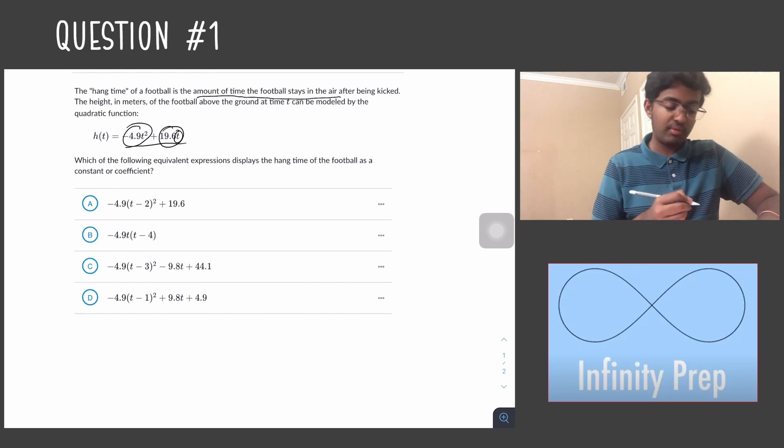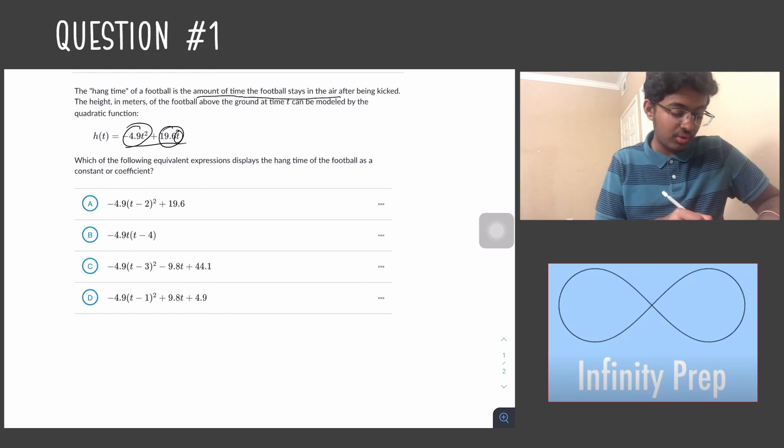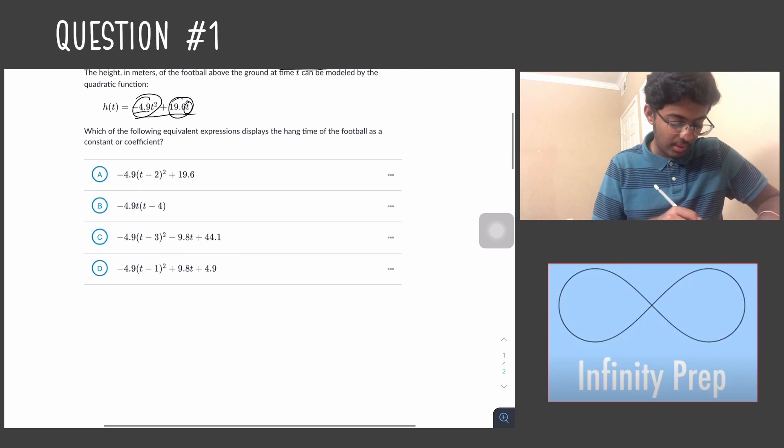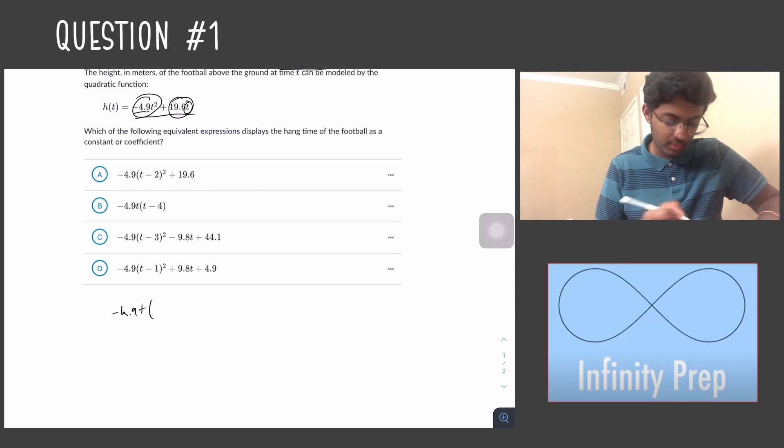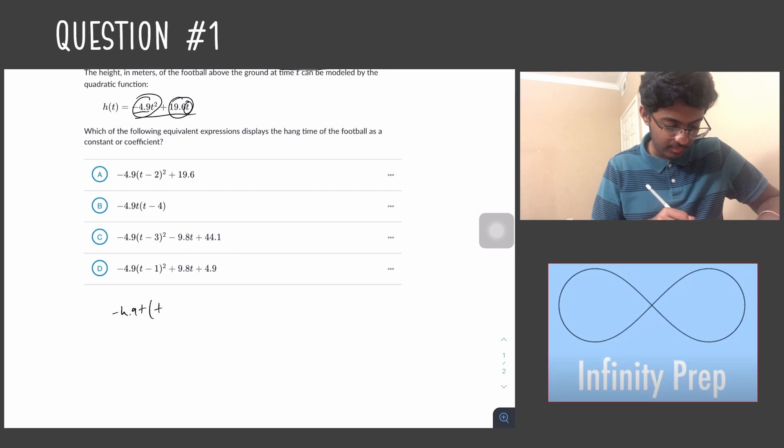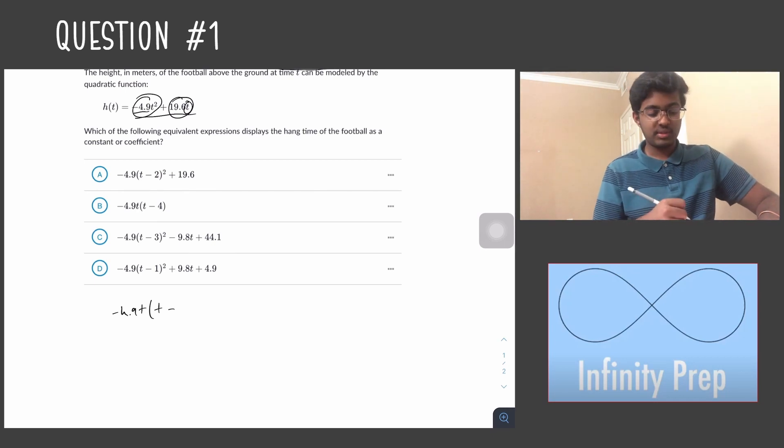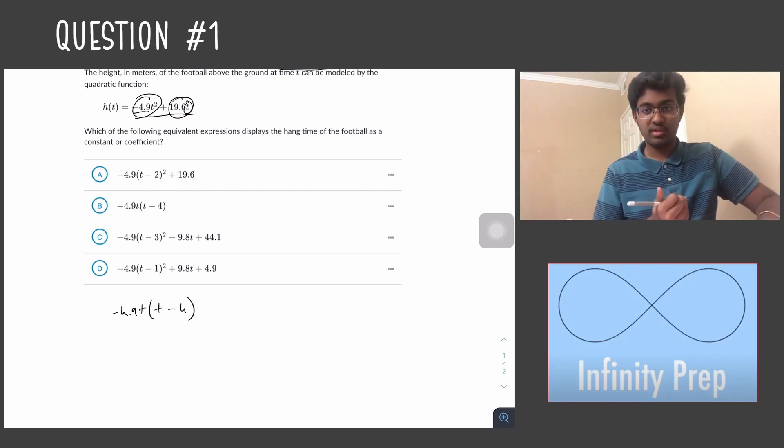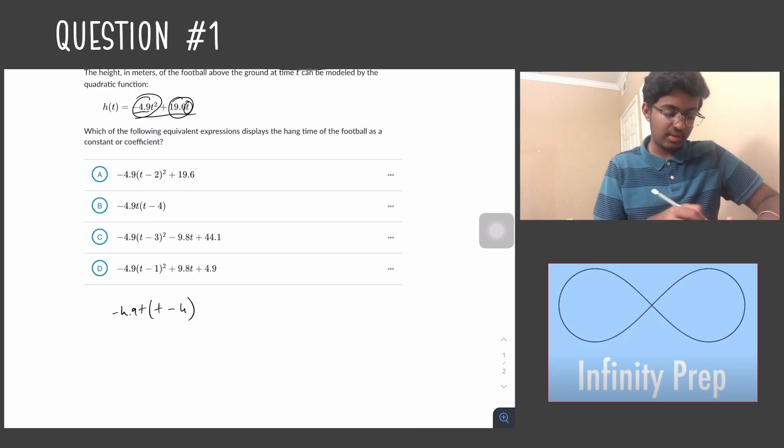When we do that we get -4.9t. When we divide, we get t minus 4. So the factored equation would be -4.9t times (t - 4), and this is answer choice B.